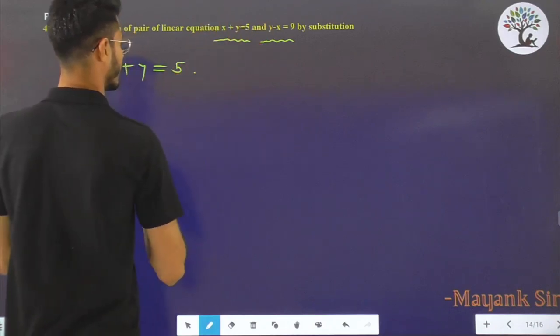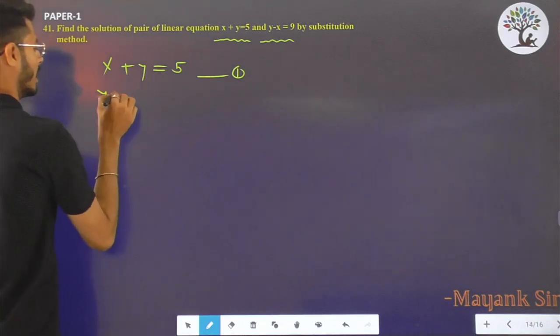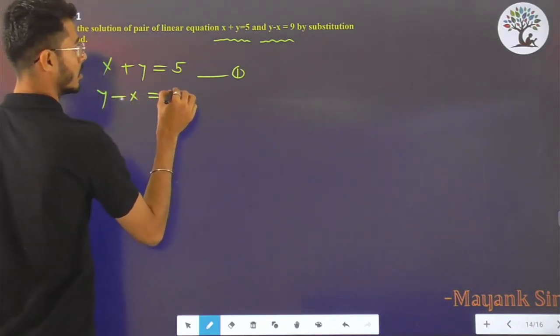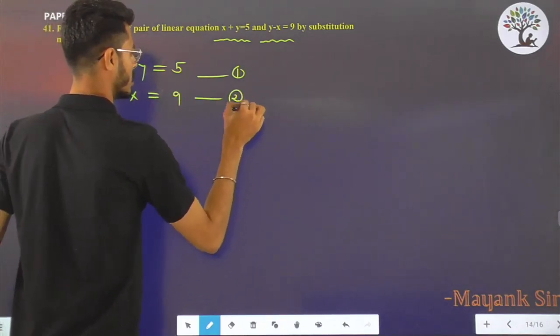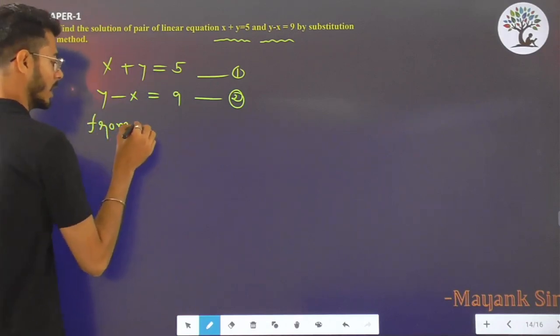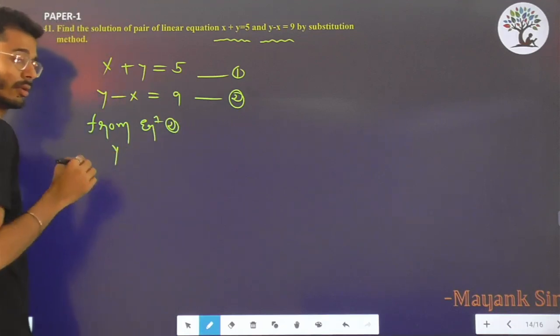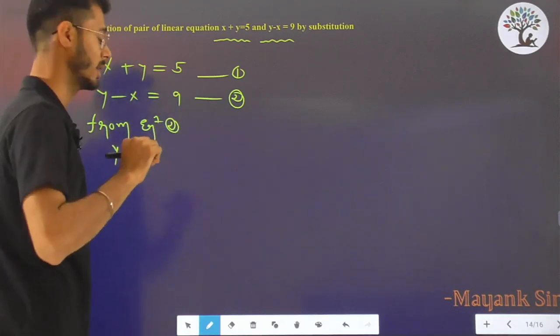Here y - x = 9, equation number 2. So from equation 2, we can substitute the value of y, either you can substitute y or x.